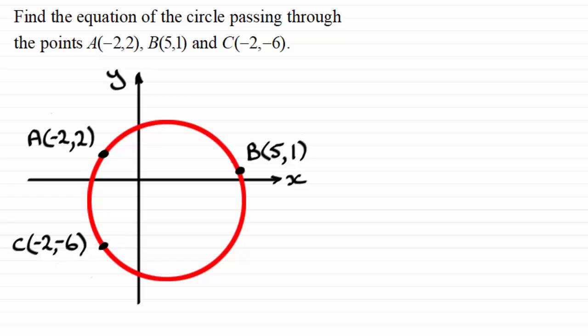When it comes to working out the equation of the circle we need to find the centre and the radius. You should be familiar with the geometrical fact that if we look at the chords of any circle — like AC, AB or BC — then the centre will always lie on the perpendicular bisector of those chords.